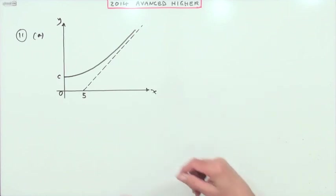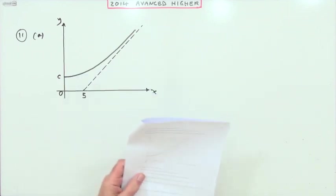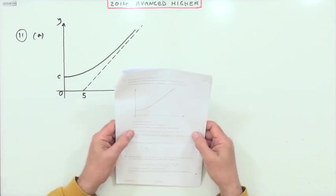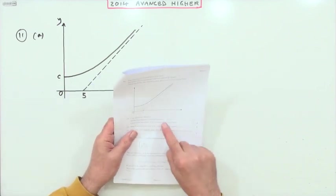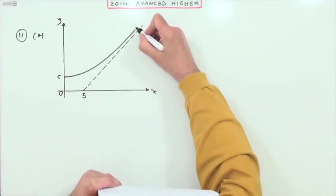So, copy the above diagram. There'll be no marks for that. On the diagram sketch the graph of y equals the inverse of f(x). So this was the graph of y equals f(x).